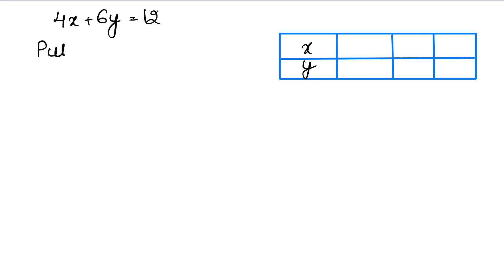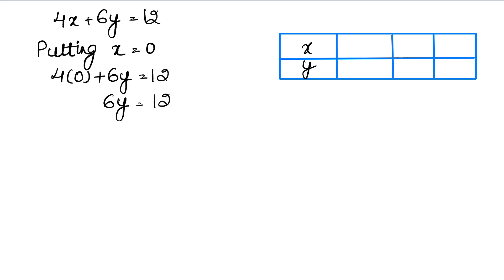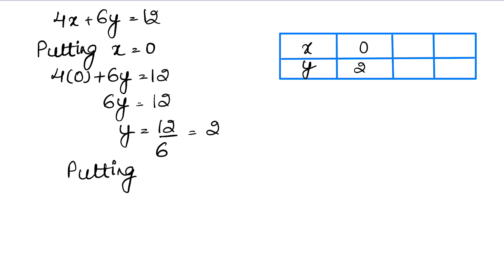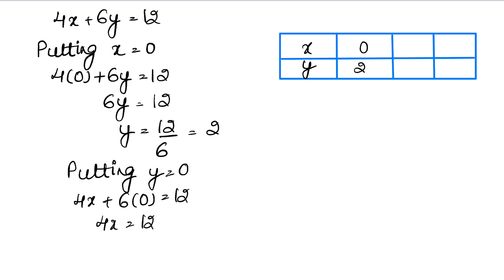Putting x equals to 0: we have 4 into 0 plus 6y equals to 12, so 6y equals to 12, then y equals to 12 upon 6, that is 2. So if x is 0, y is 2. Putting y equals to 0: we have 4x plus 6 into 0 equals to 12, so 4x equals to 12, then x equals to 12 upon 4, that is 3. So if y is 0, x is 3.